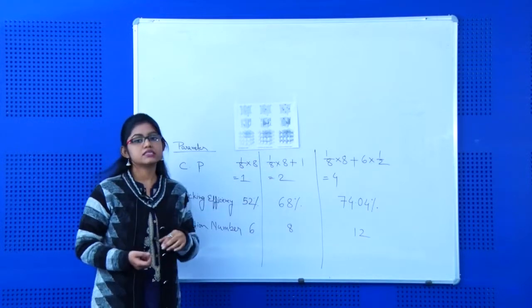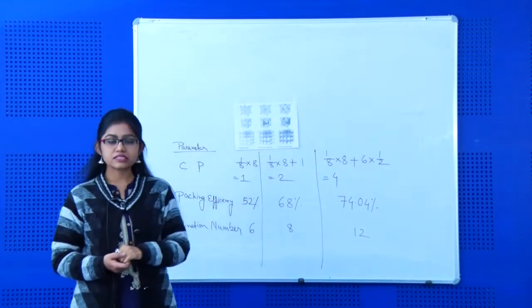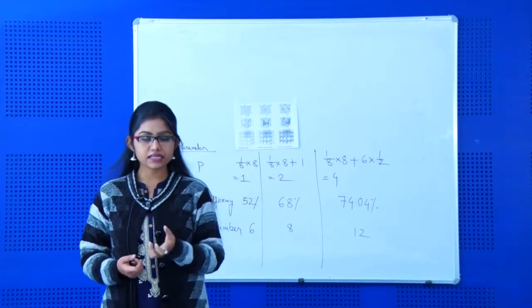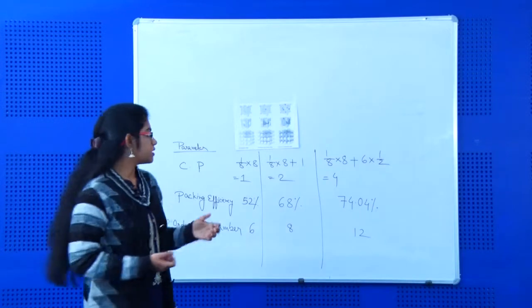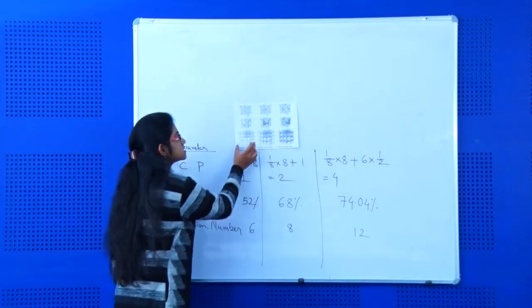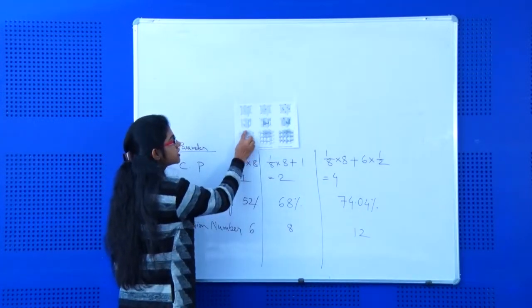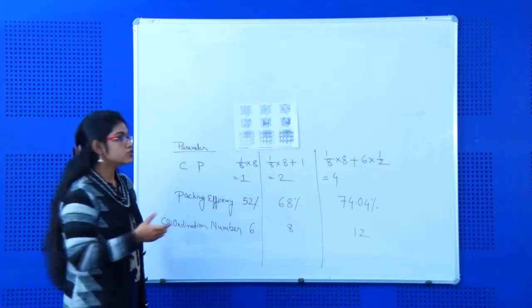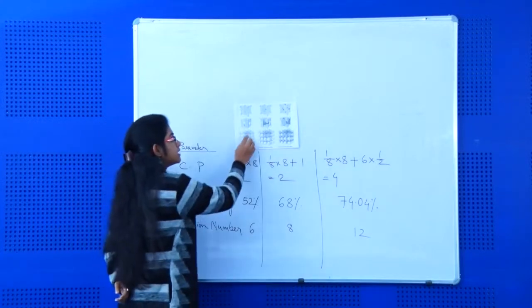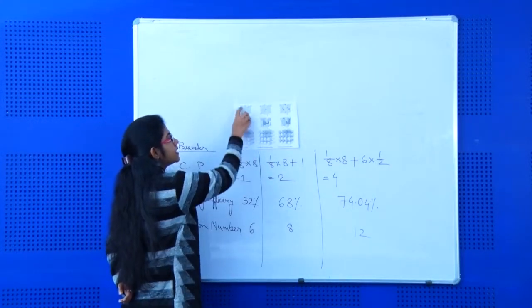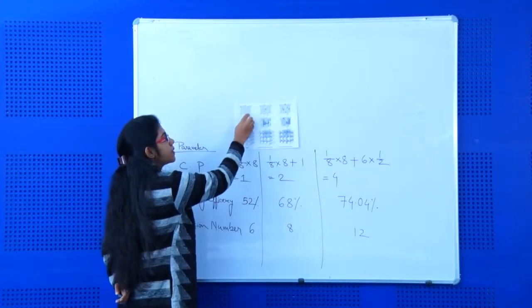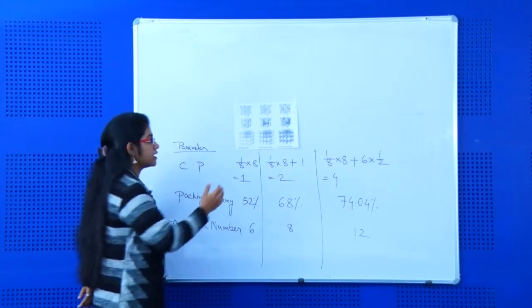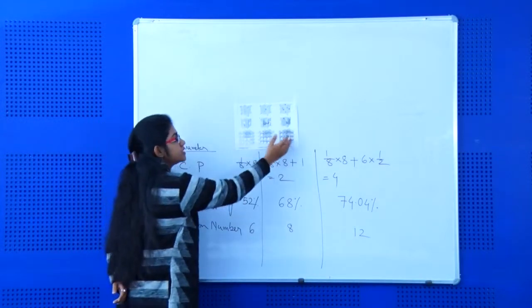Before that, we have to understand what is a unit cell. A unit cell is the smallest repeating cell. In this crystalline structure, we can assume what is a unit cell — this is a cubic cell. Depending on where the crystalline particle is located, we can classify into these three types.